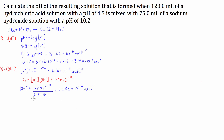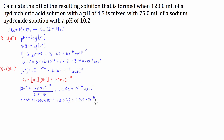We can then use the formula: moles of hydroxide equals concentration times volume. We know the concentration is 1.585 times 10 to the negative 4, and we multiply by the volume which is 0.075 litres. That gives us 1.189 times 10 to the negative 5 moles of OH⁻.